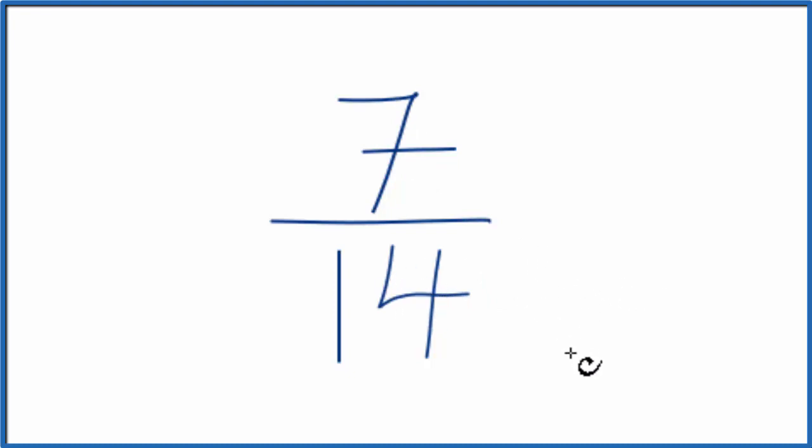So we want to find a common factor, some number that goes evenly into 7 and 14. We know that 7 will go into itself evenly, and 7 goes into 14 twice.